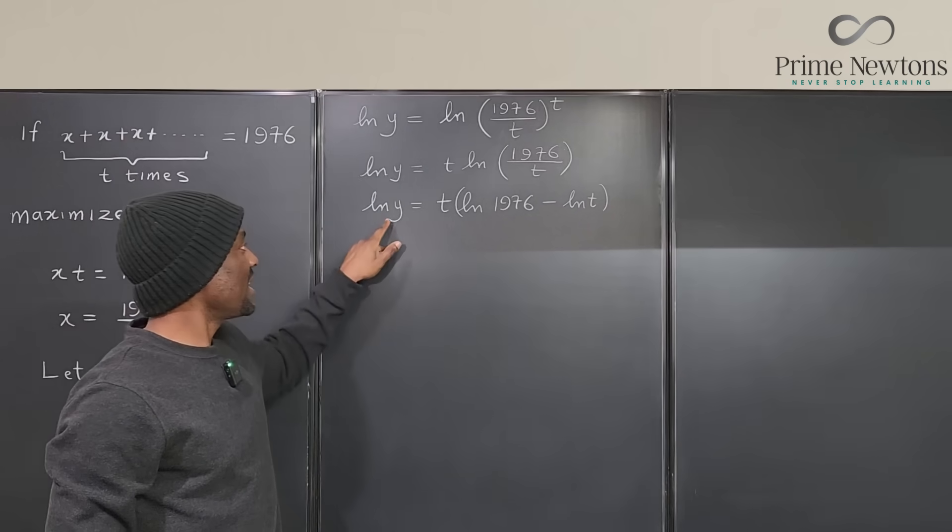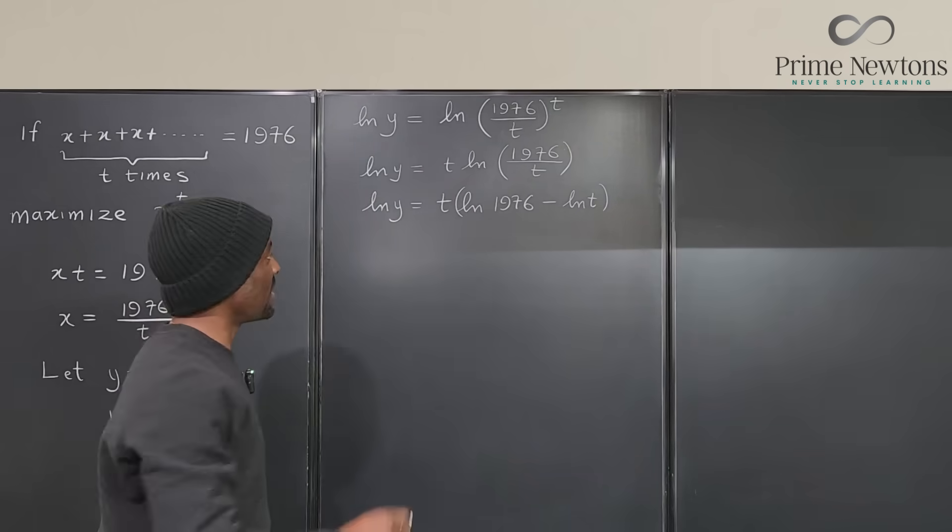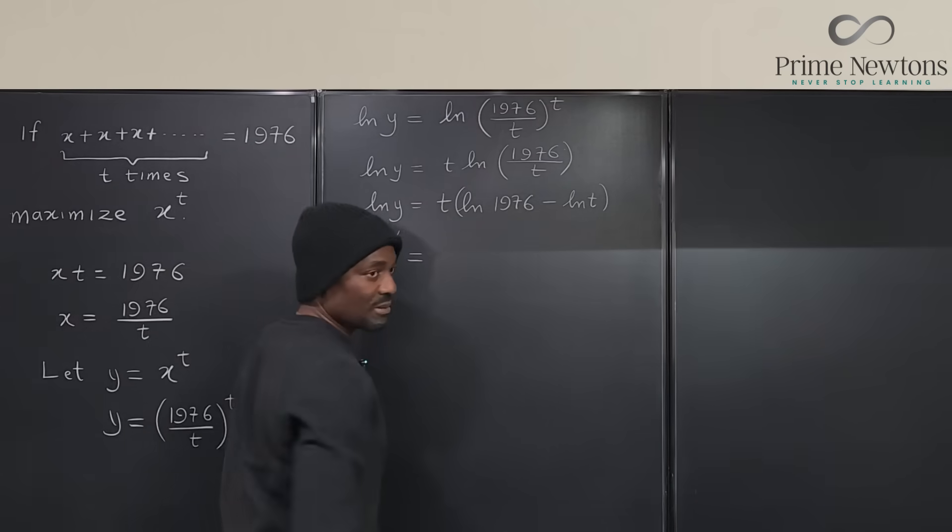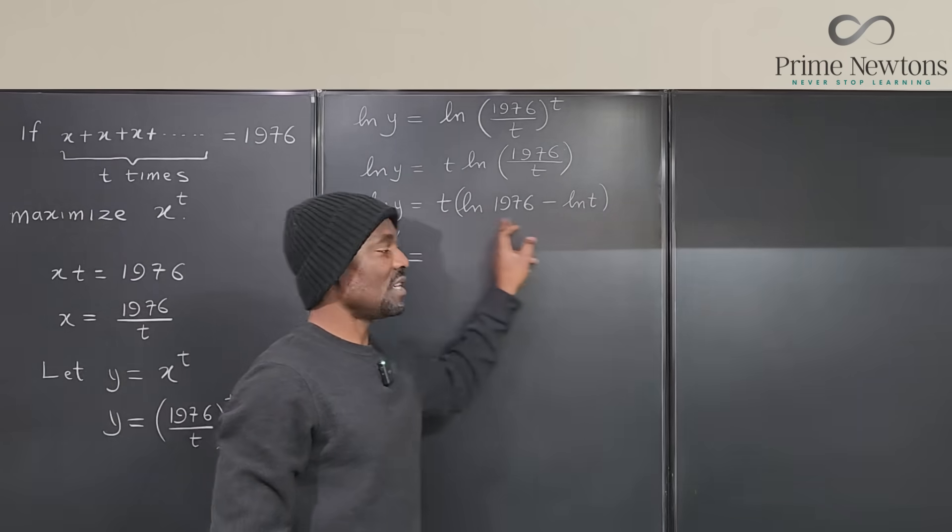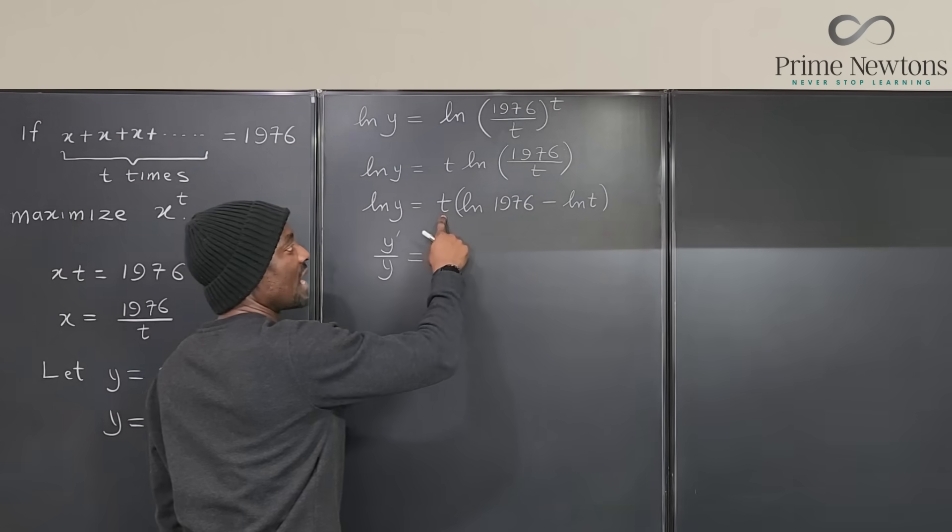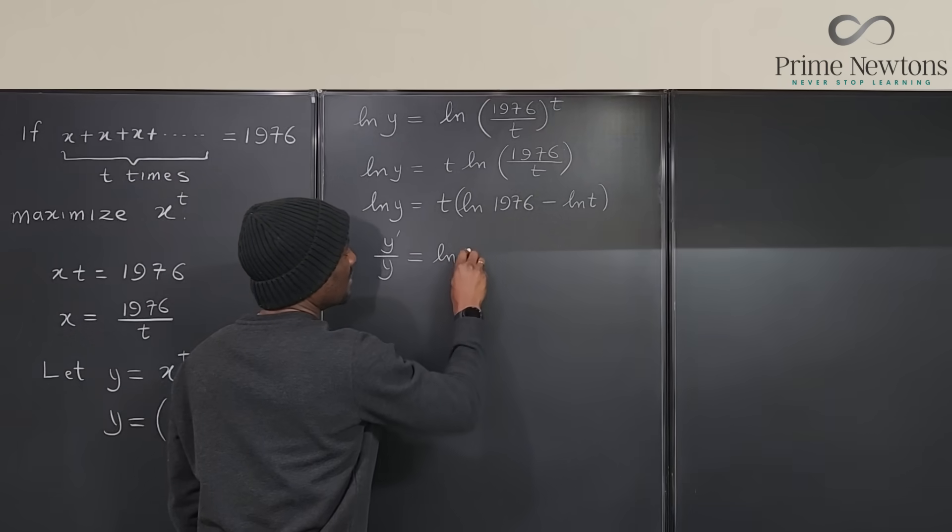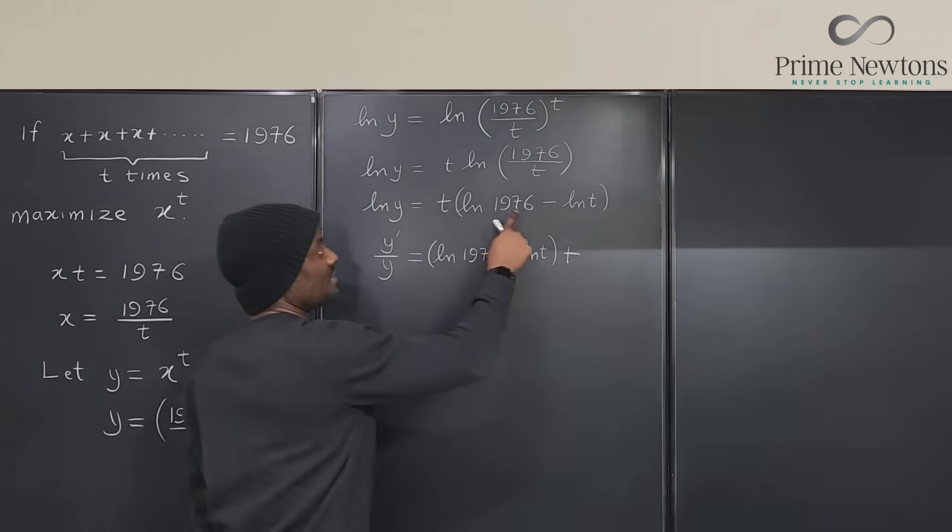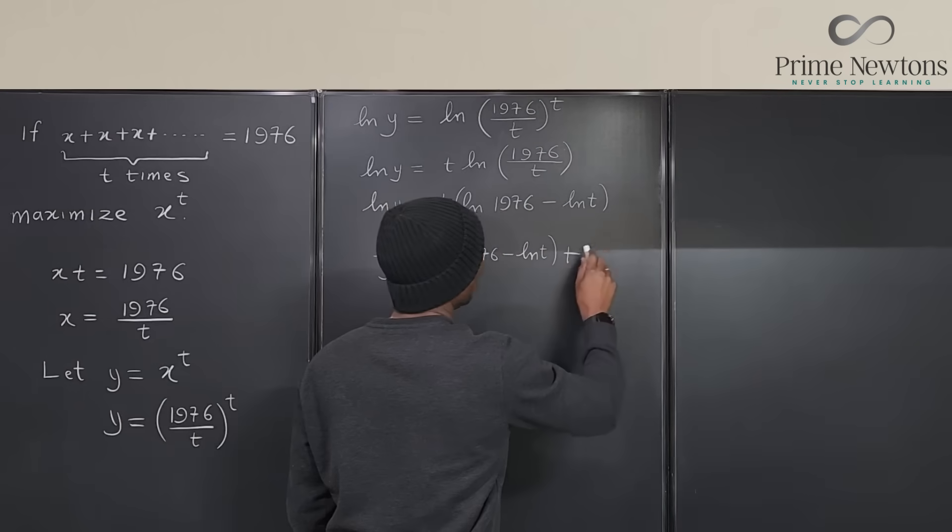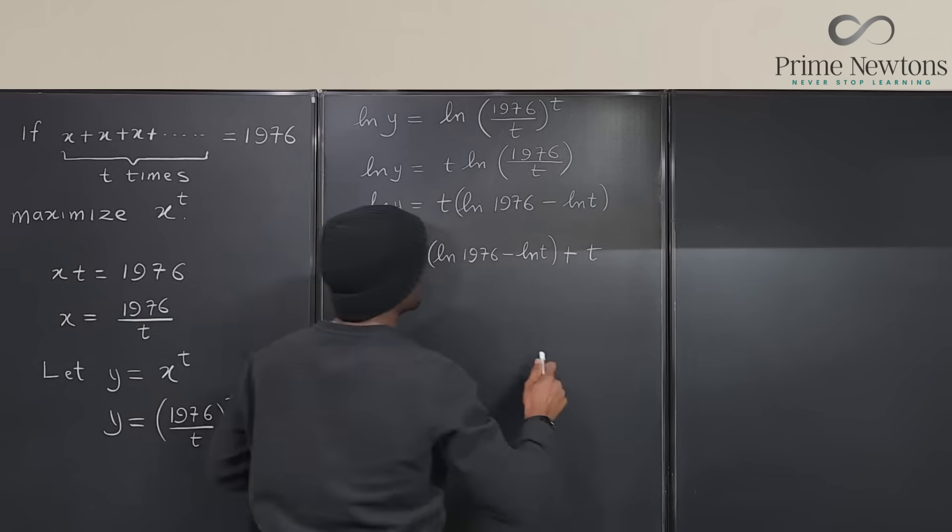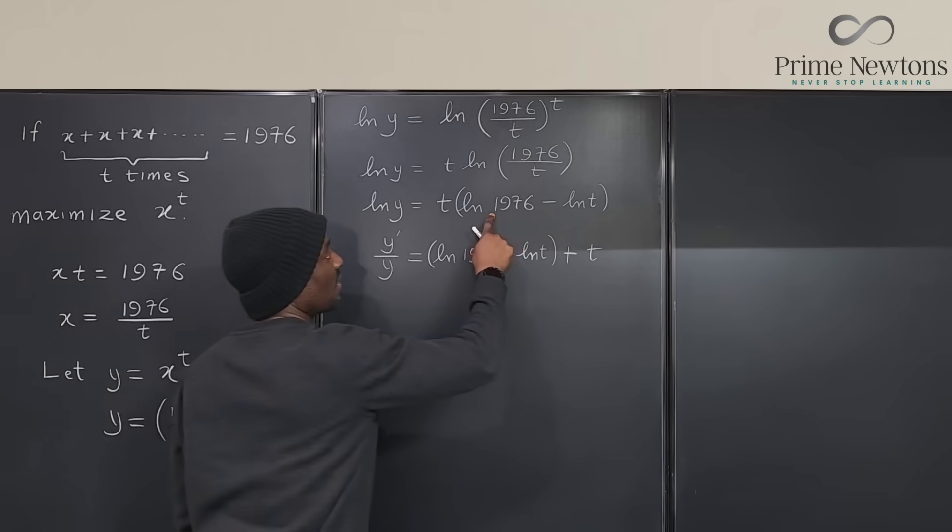Now I am going to differentiate both sides. If I differentiate this side, remember the derivative of a natural log function is basically the derivative of the argument divided by the argument. So this is going to be Y prime over Y will be equal to, apply the product rule here: differentiate the first, keep the second, and keep the first, differentiate the second. If I differentiate the first I'm going to get one, and then I'm going to keep this, so I have LN of 1976 minus LN of T.